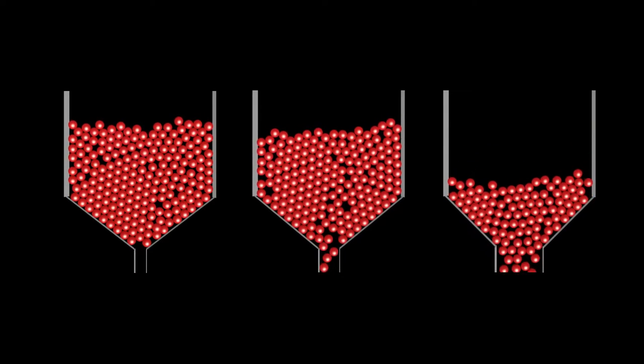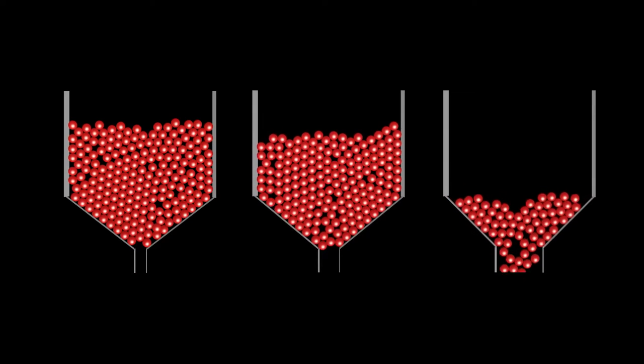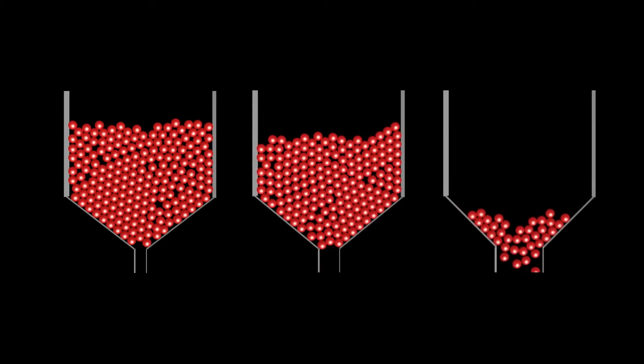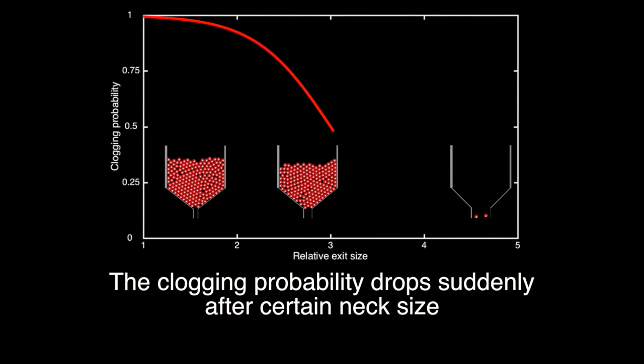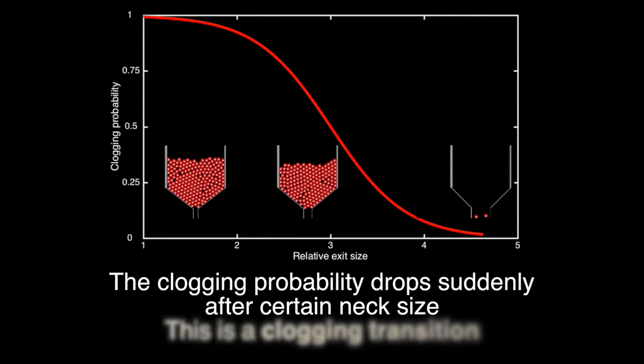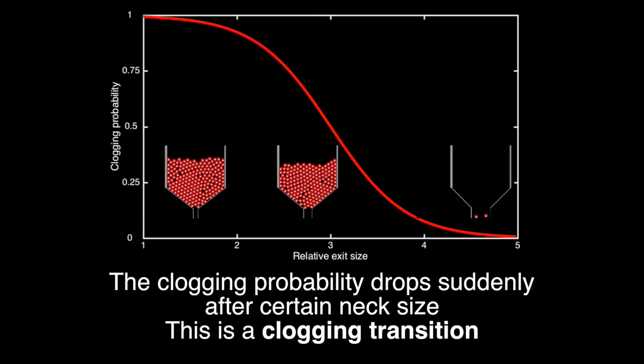So commercial hourglasses must have large necks, right? Yes. Large enough to avoid getting clogged, but small enough to control timing. And this change of behavior from clogging to flowing is what we call a clogging transition.